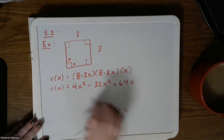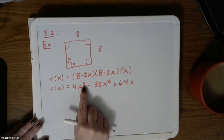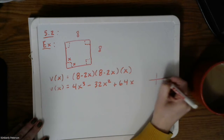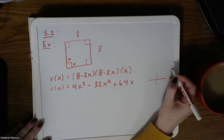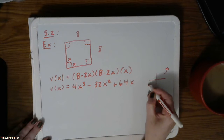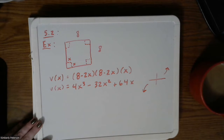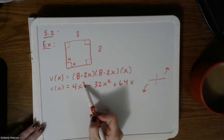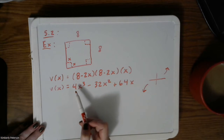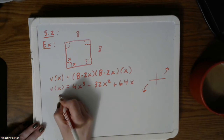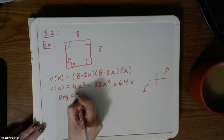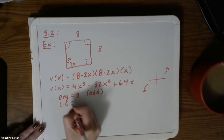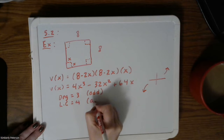The reason I did that is because now it tells me the degree and leading coefficient. We know it's a cubic, so it's going to behave accordingly. Degree is 3, which is odd, and the leading coefficient is 4 — most importantly, it is positive.